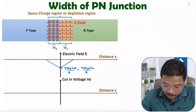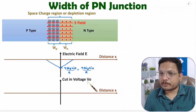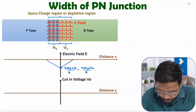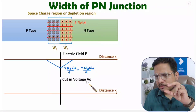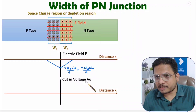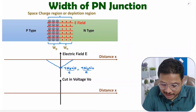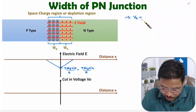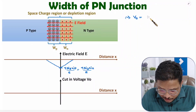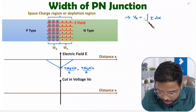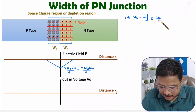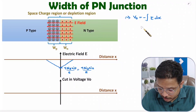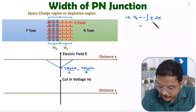Once we have the electric field, we can find the cutting voltage. You should know the basic relation between electric field and voltage. Cutting voltage V0 equals the negative integration of E·dx. Since the electric field is negative, the two negatives cancel and the result is positive.